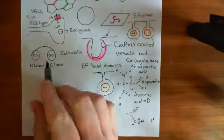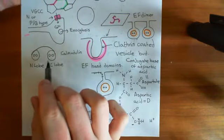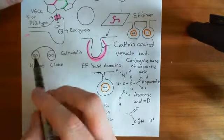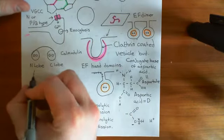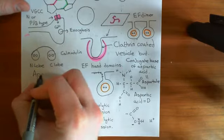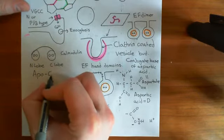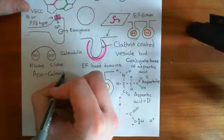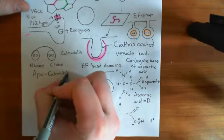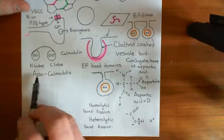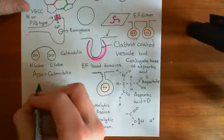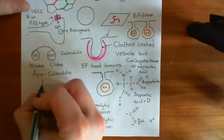The structure drawn here, with this sort of hunched-over shape, is the structure of calmodulin when it has no calcium bound to it. The structure with no calcium bound is often known as apocalmodulin. So calmodulin with no calcium bound to any of these four sites is known as apocalmodulin.